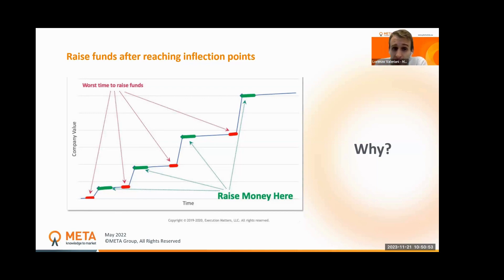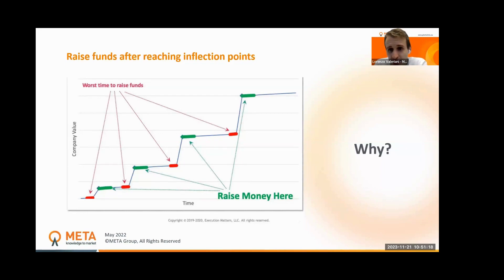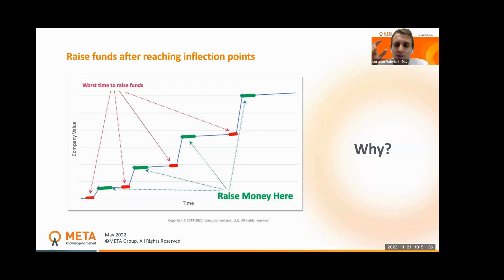If you start raising before reaching milestones, your traction is perceived as weaker, risk is higher, and your company valuation is lower — worse conditions for you. It's very important to raise after inflection points and to raise enough money to reach the next inflection point. A big suggestion: when calculating the amount needed for the next year to reach the next milestone, always add a 20-30% buffer for emergencies and unforeseen expenses.